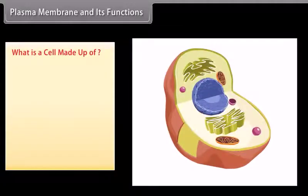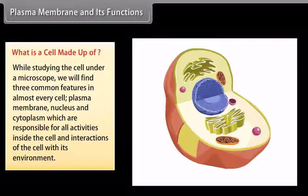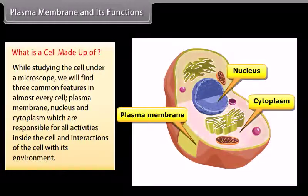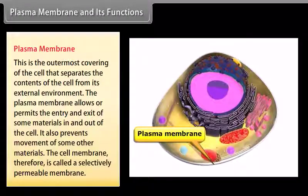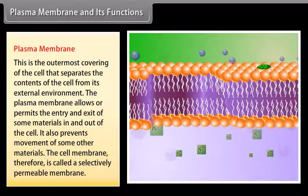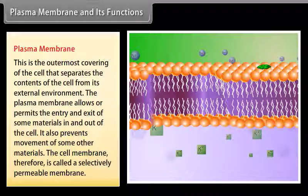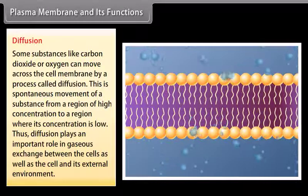Studying the cell under a microscope reveals three common features in almost every cell: plasma membrane, nucleus, and cytoplasm, which are responsible for all active activities inside the cell and interactions with its environment. The plasma membrane is the outermost covering of the cell that separates the contents of the cell from its external environment. It allows or permits the entry or exit of some materials in and out of the cell while preventing the movement of others, making it a selectively permeable membrane.